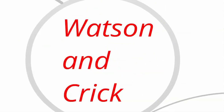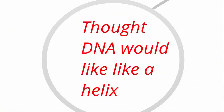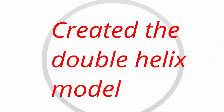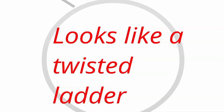Watson and Crick are extremely famous for their discovery of the double helix model of DNA. They thought that DNA would look like a helix — kind of like a spiral, spiraling like a spiral staircase. They created the double helix model and thought it looked like a twisted ladder. Those are the three things you need to know about Watson and Crick.